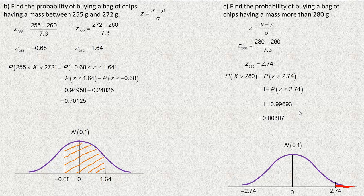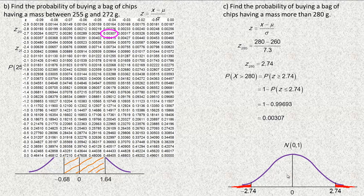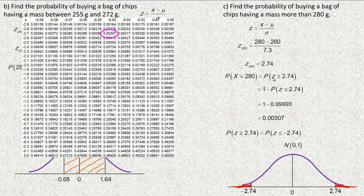There's also a shortcut for greater-than probabilities. Because the normal distribution is symmetrical, the probability that z is greater than 2.74 equals the probability that z is less than negative 2.74. Looking up negative 2.74 in the table directly gives 0.00307 — the same result. So for greater-than problems, you can simply look up the opposite (negative) z-score in the table. That's the end of the tutorial.